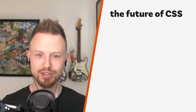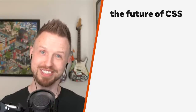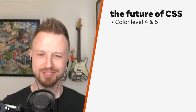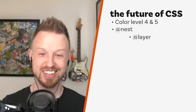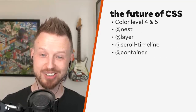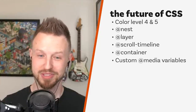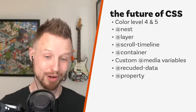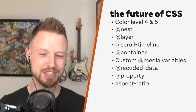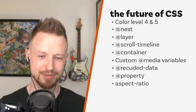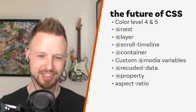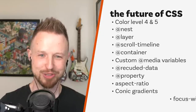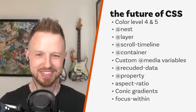Let's do a flat list of just all the things — I chose 11 for this short version. I have: color level four and five, @nest, @layer, @scroll-timeline, @container, custom @media, @property, aspect ratio, conic gradients, and :focus-within. Those are my 11, and most of these are in the moderate to low risk category, so you can get started with a lot of them.